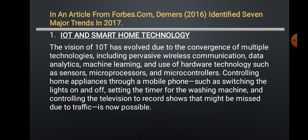IoT and Smartphone Technology: The Internet of Things (IoT) has evolved due to the convergence of multiple technologies, including pervasive wireless communication, data analytics, machine learning, and hardware technologies such as sensors, microprocessors, and microcontrollers. Controlling home appliances through a mobile phone — such as switching the light on and off, setting the timer of the washing machine, and controlling the television to record shows — is now possible.